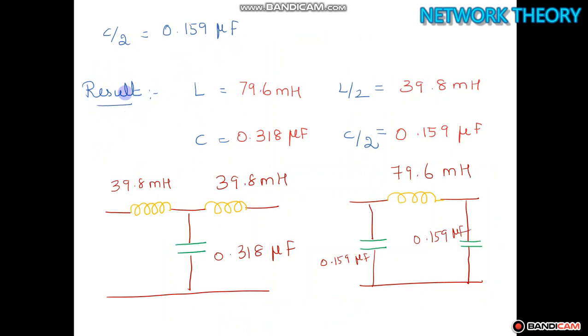Now the result is we are designing a constant K low pass filter both T and phi sections. First write down the values L, L by 2, C, C by 2. Now in the diagram design fill the values. L by 2 is 39.8 millihenry on both series arms. C is equal to 0.318 microfarad. For a pi section L is 79.6 millihenry and C by 2 is 0.159 microfarad for both the arms.